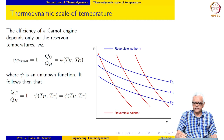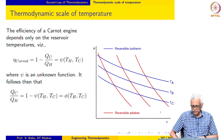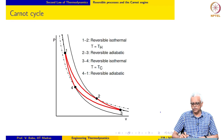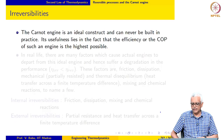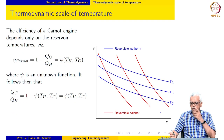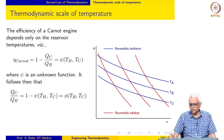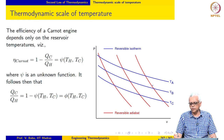We start by illustrating the Carnot cycle on a PV diagram. Although we used a slightly different illustration earlier, here we show more reversible adiabats and isotherms schematically. Each blue line is a reversible isotherm and the red lines are all reversible adiabats. The Carnot engine operates between two reversible adiabats and two reversible isotherms.